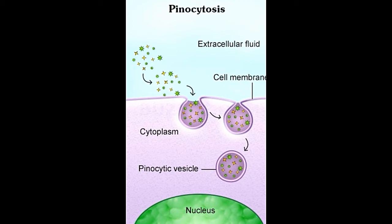Definition — Phagocytosis: it is the internalization of larger extracellular solid particles, such as bacteria, from the surrounding medium. It is sometimes referred to as cell-eating. Pinocytosis: it is the internalization of extracellular fluids along with their solute molecules from the surrounding medium. It is sometimes referred to as cell-drinking.